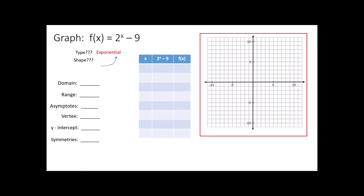Whenever you begin with a function, you want to identify what type it is and then identify what the graph will look like. The question asks me to give the domain of the function. The domain is which values of x will work if I plug them in. We can get that information from the graph, because I know this is going to go forever to the right and forever to the left. Every possible x on the number line is going to work, so I can express the domain as every x, as long as that x is a real number.